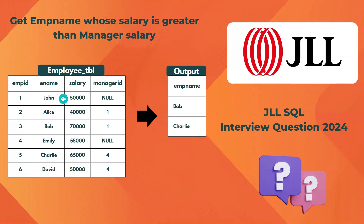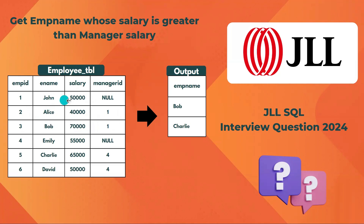For example, if you look at employee John, the manager ID is null — John doesn't have any manager. But for the next two records, employee IDs 2 and 3, the manager ID is 1 for Alice and Bob, so their manager is John. John's manager salary is 50,000, while Alice and Bob's salaries are 40,000 and 70,000. So Bob is the one with a 70,000 salary, which is greater than his manager's salary.